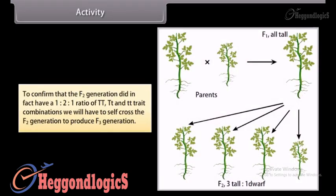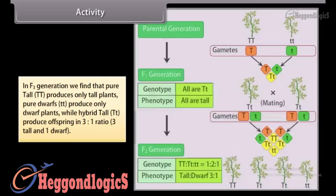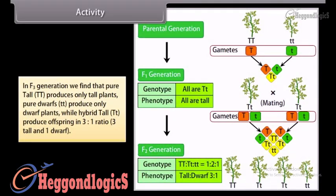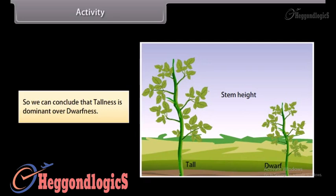To confirm that the F2 generation had a 1:2:1 ratio of TT, Tt, and tt trait combinations, we self-cross the F2 generation to produce the F3 generation. In the F3 generation, pure tall (TT) produces only tall plants, pure dwarf (tt) produces only dwarf plants, while hybrid tall (Tt) produces offspring in a 3:1 ratio — three tall and one dwarf. We can conclude that tallness is dominant over dwarfness.